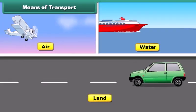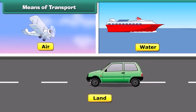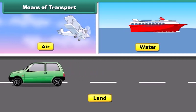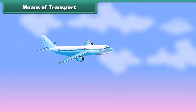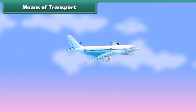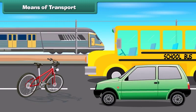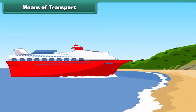Transport is carried out through various modes such as land, water and air. The vehicles used in these modes are not the same. For example, airplanes fly in air; buses, cars, bicycles and trains move on land; and ships move in water.